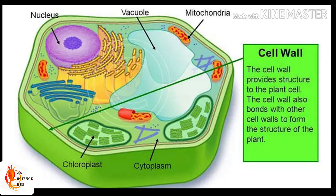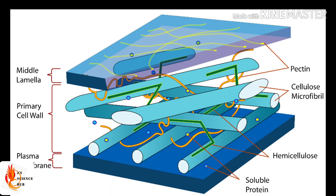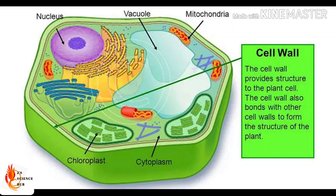So now we find out the second main difference between plant and animal cells. When you further look at these cells you will find out the plant cell possesses an extra layer other than the cell membrane. This exterior layer is known as the cell wall. Cell wall is made up of cellulose, hemicellulose and pectin. Cell wall protects and maintains the structure of the plant cell.